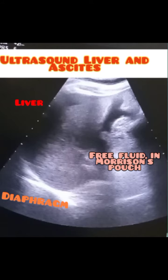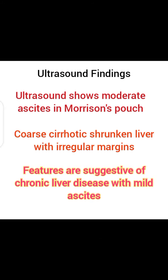This is a picture of ultrasound liver and ascites. You can see the liver, diaphragm, and free fluid in the Morrison's pouch. The ultrasound findings show moderate ascites, coarse cirrhotic shrunken liver with irregular margins — features suggesting chronic liver disease with mild ascites.